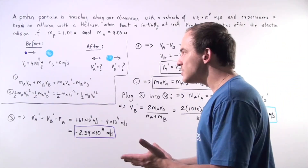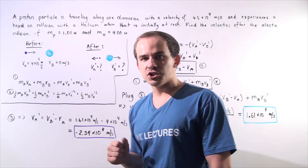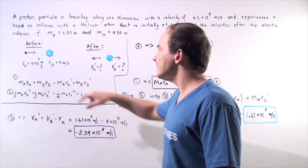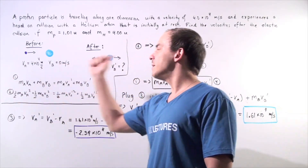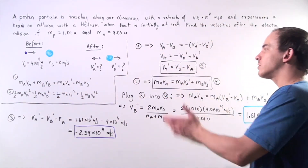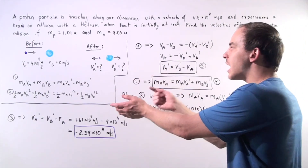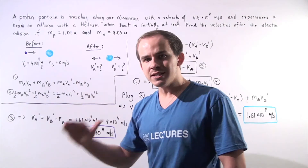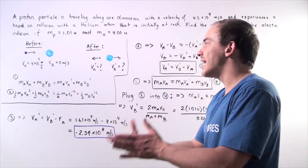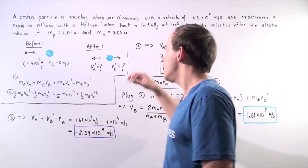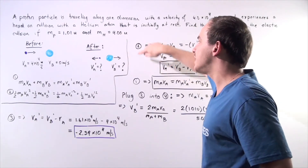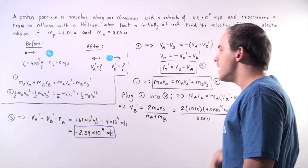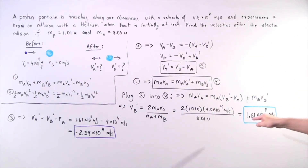Initially, the helium atom is stationary and the proton is moving in the positive direction. After the collision, the proton reverses direction and its magnitude decreases because some kinetic energy transferred to the helium atom. The helium atom now moves at 1.61 times 10 to the 4 meters per second in the positive direction.